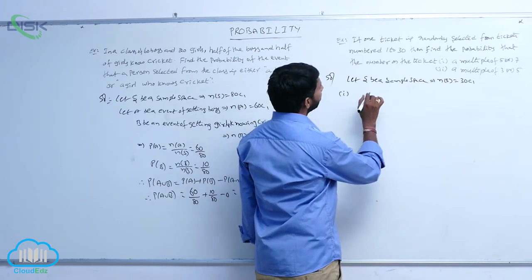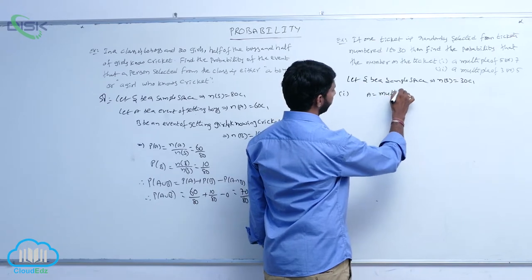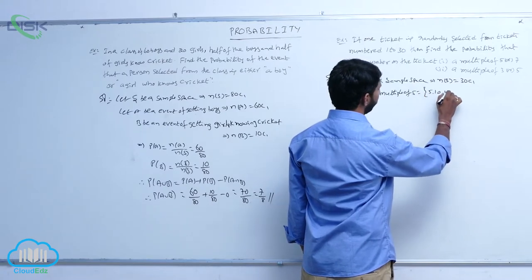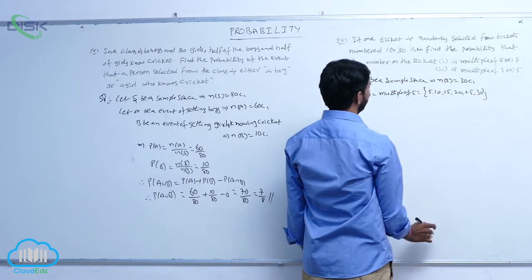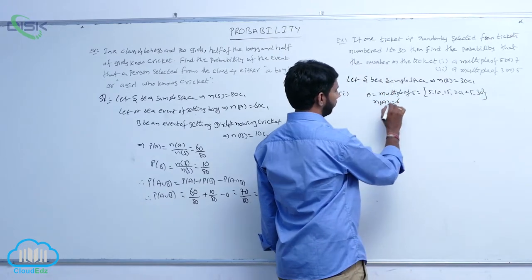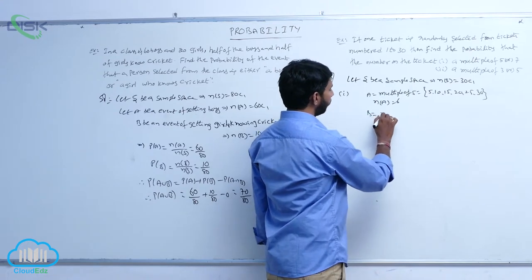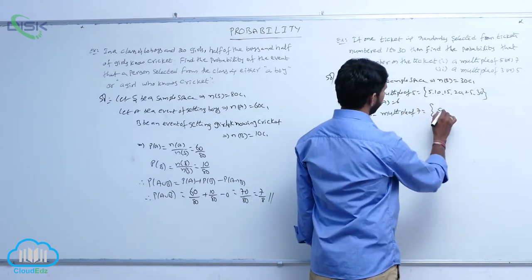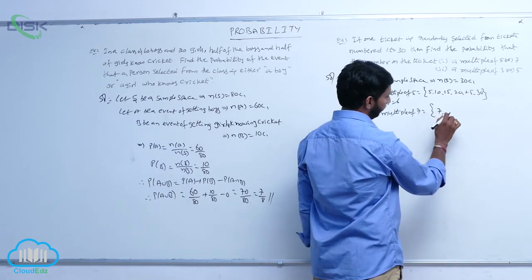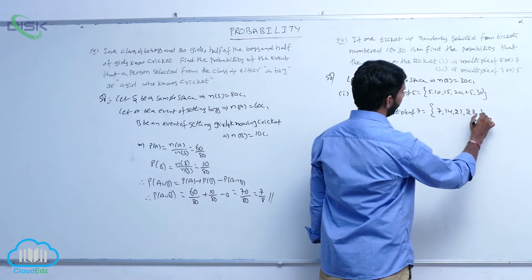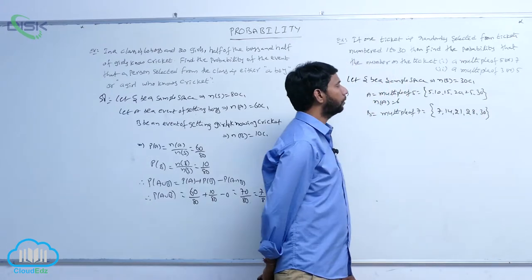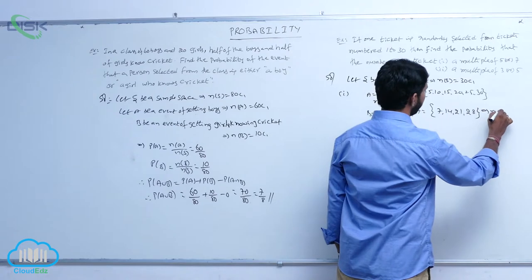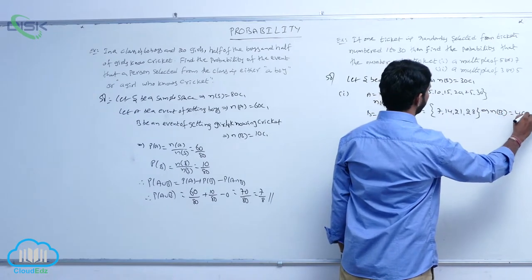Let A be the event of multiples of 5: {5, 10, 15, 20, 25, 30}, so N of A is equal to 6 C1. Let B be the event of multiples of 7: {7, 14, 21, 28}, so N of B is equal to 4 C1. A intersection B is equal to the empty set, which implies the probability of the empty set is equal to 0.